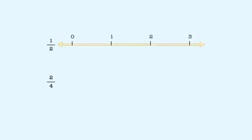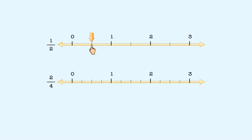For example, let's look at the fractions one-half and two-fourths. To represent these fractions, let's start by drawing two number lines that have the same size units. Now let's divide the units on the first line into halves, and divide the units on the second line into fourths. On the first line, we show one-half here. On the second line, we show two-fourths here.